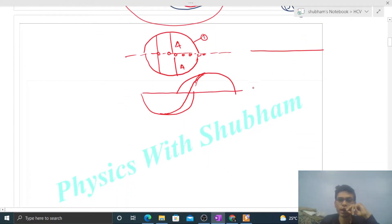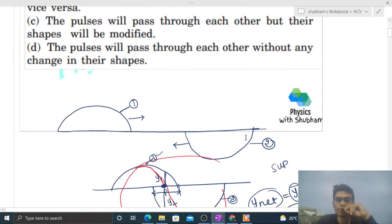And wave 1 aage nikal jayega, wave 2 peeche nikal jayega, and overlap finish ho jayega. But inka jo original shape hai na wo maintained rahega. Means before overlap jo shape tha pulse 1 ka aur you can say wave 1 ka wo intact rahega. Similarly, wave 2 ka bhi jo shape hai wo as it is rahega.